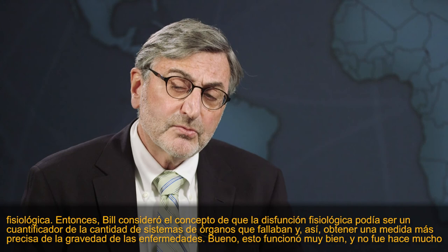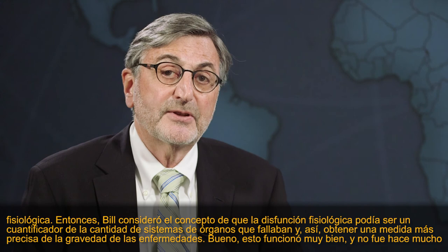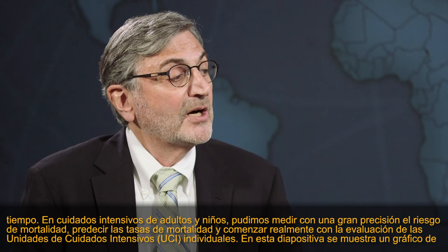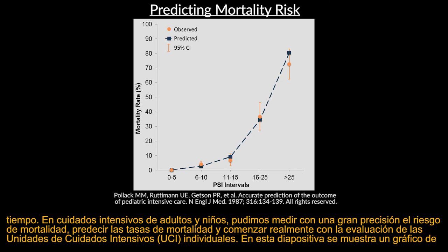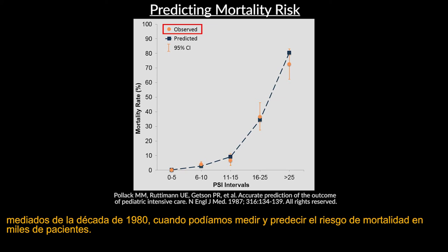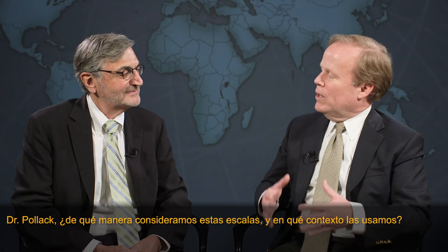That worked really well. It wasn't too long before both in adult and pediatric intensive care we were able to very accurately measure mortality risk, predict mortalities, and actually begin the assessment of individual ICUs. This slide shows a graph from the mid-1980s where we were able to measure and predict mortality risk in thousands of patients.